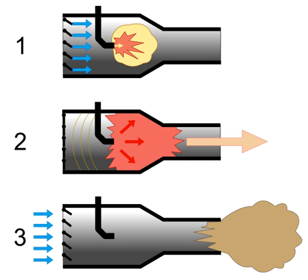However, pulsejets are used on a large scale as industrial drying systems, and there has been a resurgence in studying these engines for applications such as high-output heating, biomass conversion, and alternative energy systems, as pulsejets can run on almost anything that burns, including particulate fuels such as sawdust or coal powder. Pulsejets have also been used to power experimental helicopters, with engines attached to the ends of the rotor blades.